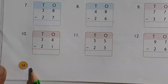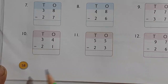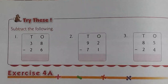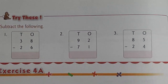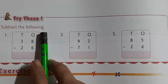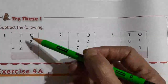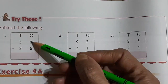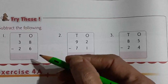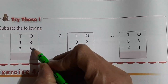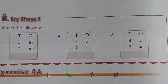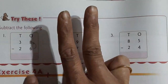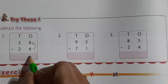On page number 58 there is 'Try This' at the top of the page. We are going to solve it — subtract the following. Always we have to start from the ones column. You have to open 8 fingers, otherwise you can count after 6 also. After 6 there comes 7 and 8, so there are 2 fingers remaining. That 2 we are writing here.